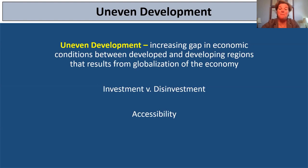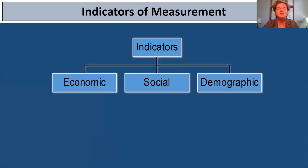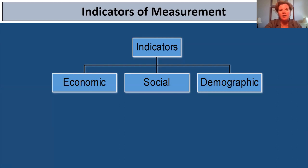So how do we measure development? What are those conditions that suggest whether a country is developed or still developing? We're going to talk about indicators of measurement — these are those varying conditions we use to measure development. I'm going to divide these into three broad categories: economic, social, and demographic. You may have learned about the United Nations HDI or Human Development Index — that is one way used to measure levels of development from country to country. But keep in mind it's only one way. I'm going to use those three broad categories to talk about different indicators of measurement.